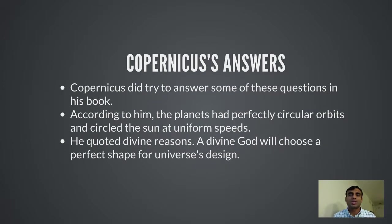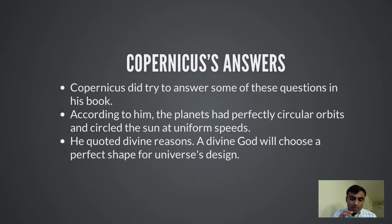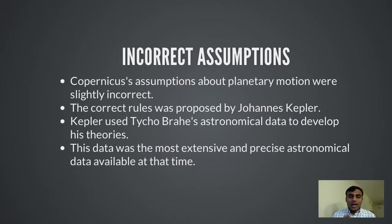Copernicus had tried to answer some of these questions in his book. He assumed that the sun was at the center and that when planets went around the sun, the motion was uniform circular motion — meaning the orbit was perfectly circular and the speed of the planets was constant. He quoted divine reasons for this, feeling that if a divine geometer was going to design the universe, he would choose perfect shapes, and a circle was a perfect shape.